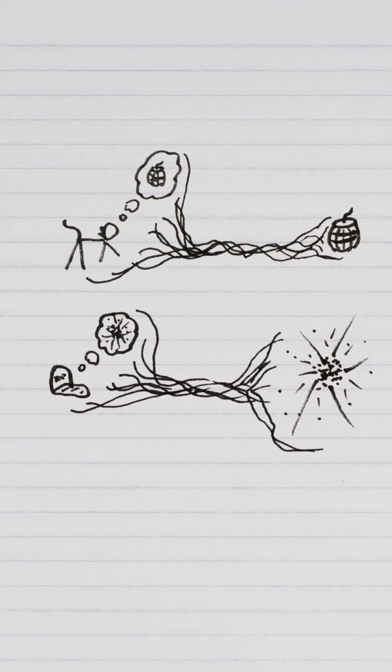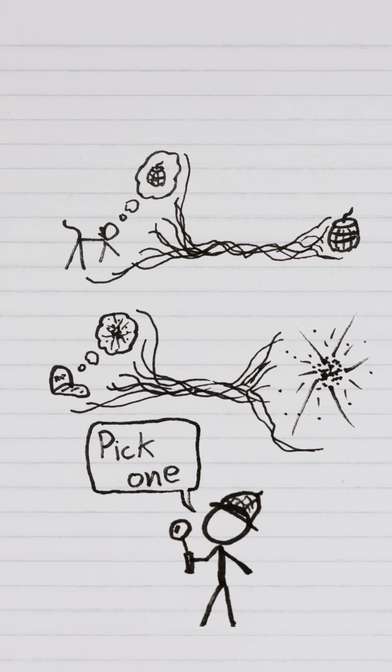So the cat's reality becomes entangled with the outcome of the experiment. And it's our observation of the experiment that forces nature to collapse to one option or the other.